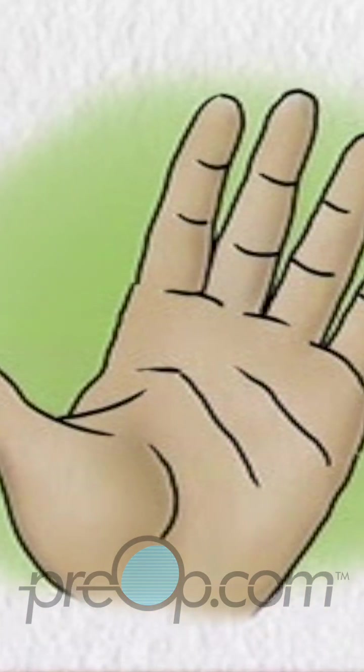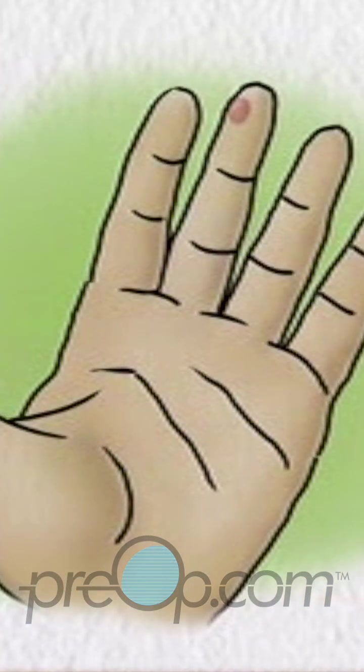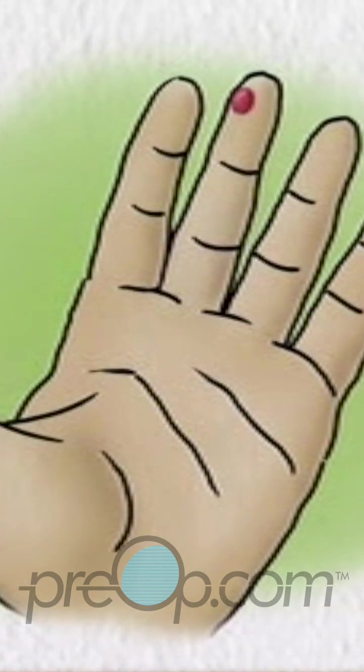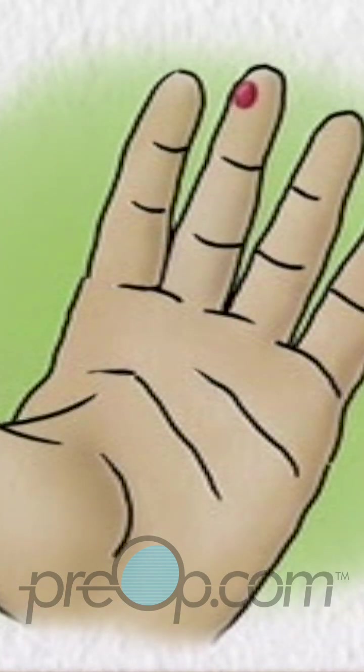If a drop of blood does not form on its own, stroke down the finger towards the puncture site without going as far as the site itself.